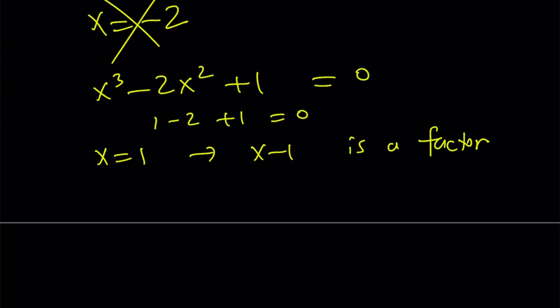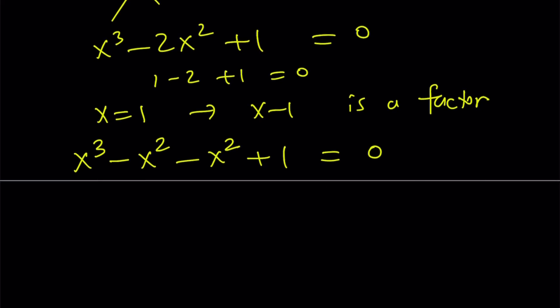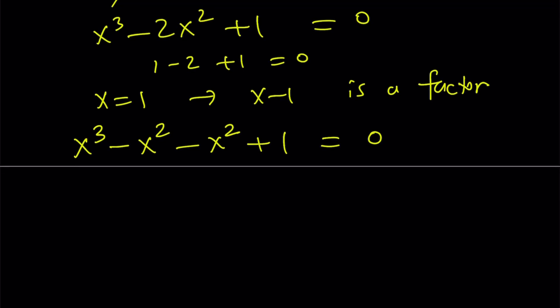So x minus 1 is a factor, and let's go ahead and figure out how we can factor this with that knowledge. So I can kind of break down the negative 2x squared into negative x squared minus x squared, or minus x squared minus x squared, however you want to see it. Some folks don't like the term negative because it's used for negative numbers, but I also use it as a minus term. Anyways, it doesn't matter. I guess it's no big deal.